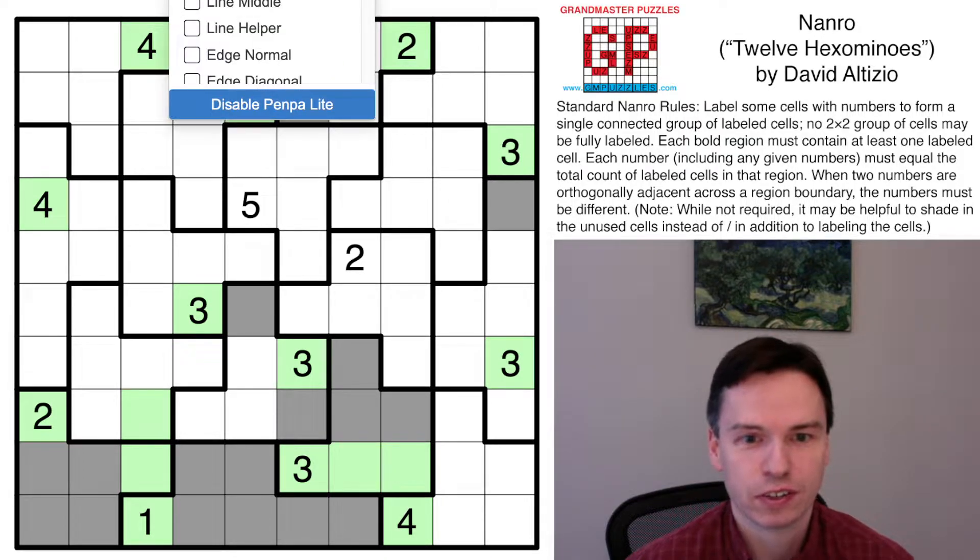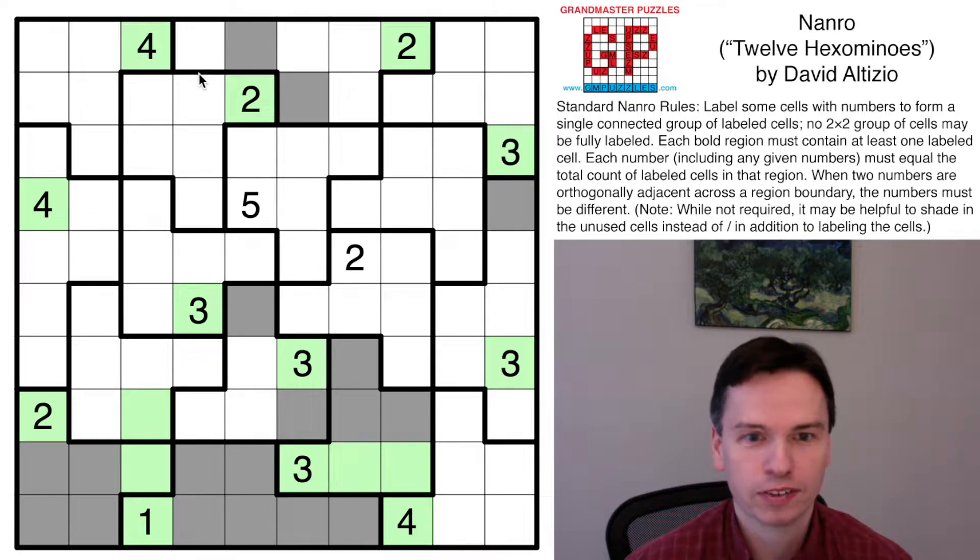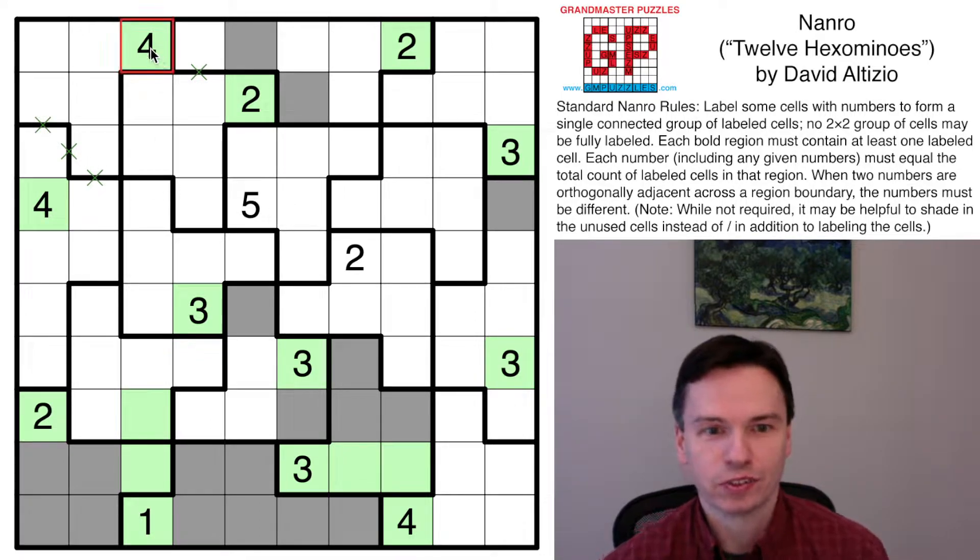So if I actually had turned on something I often do in paper, like edge helper mode, I know this is an X here. These are X's across this space, and so this four has to work through this region and only this region to then connect to this or to this.